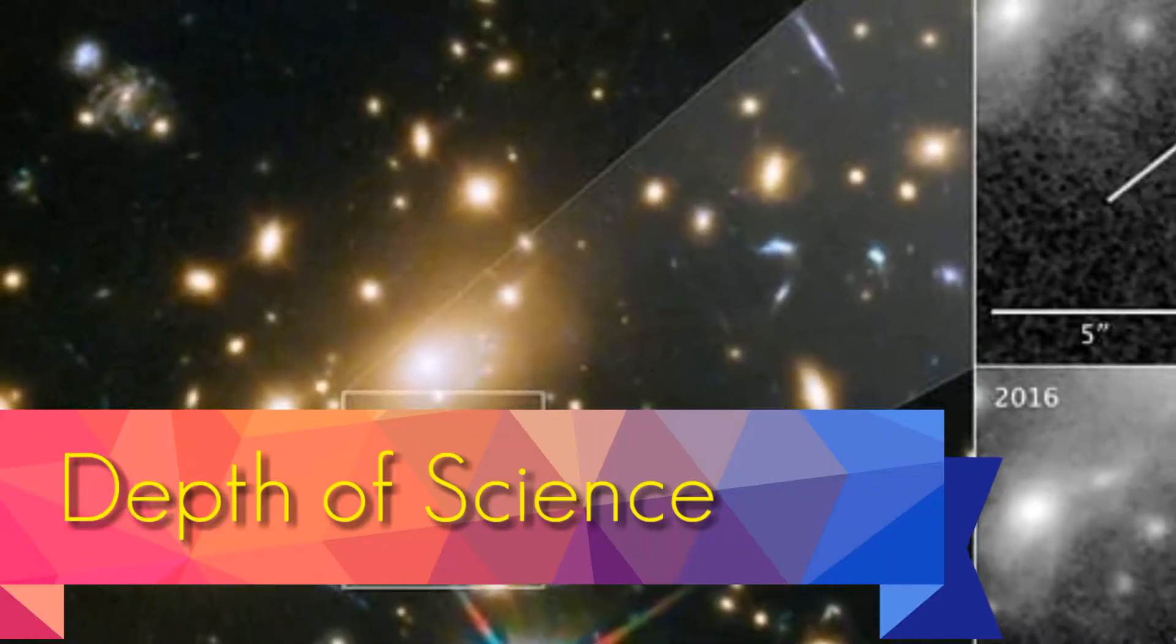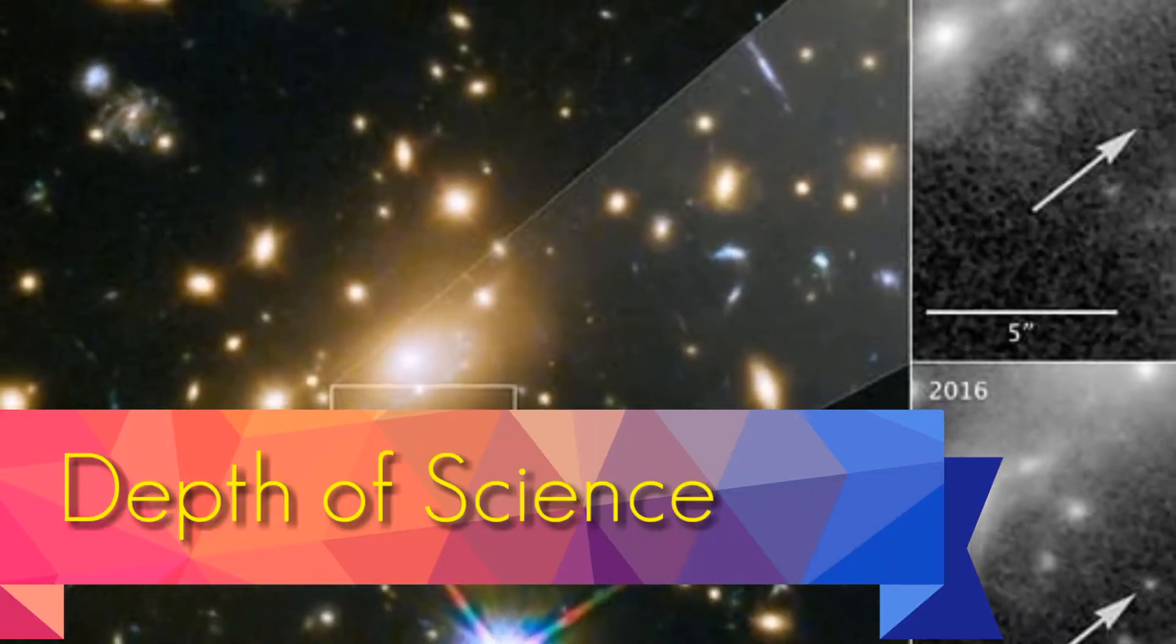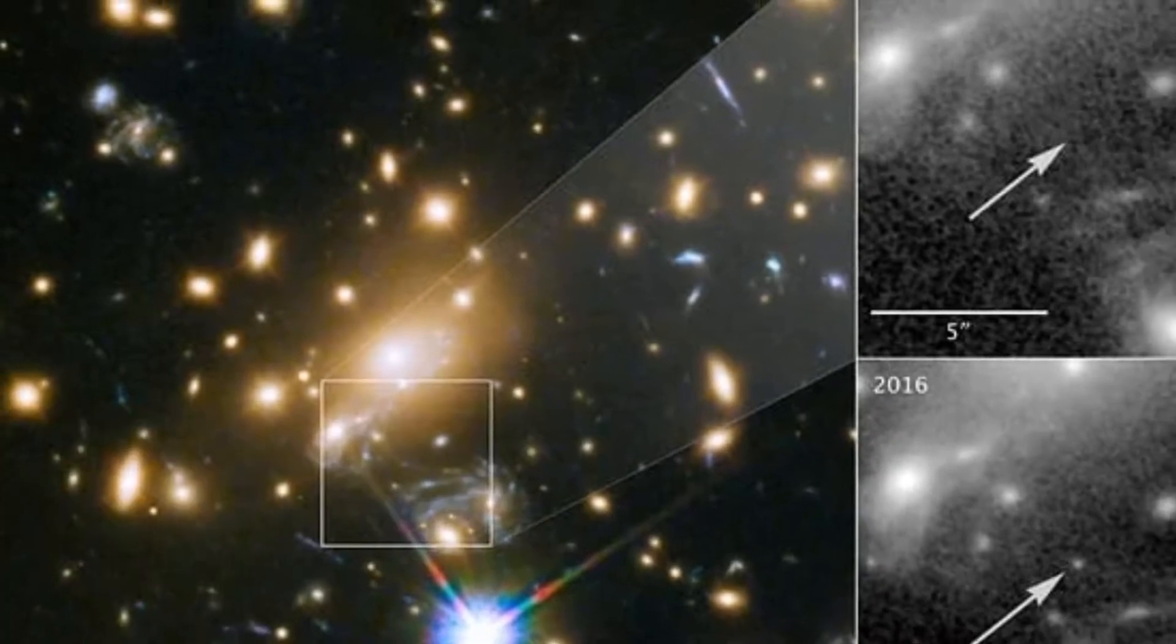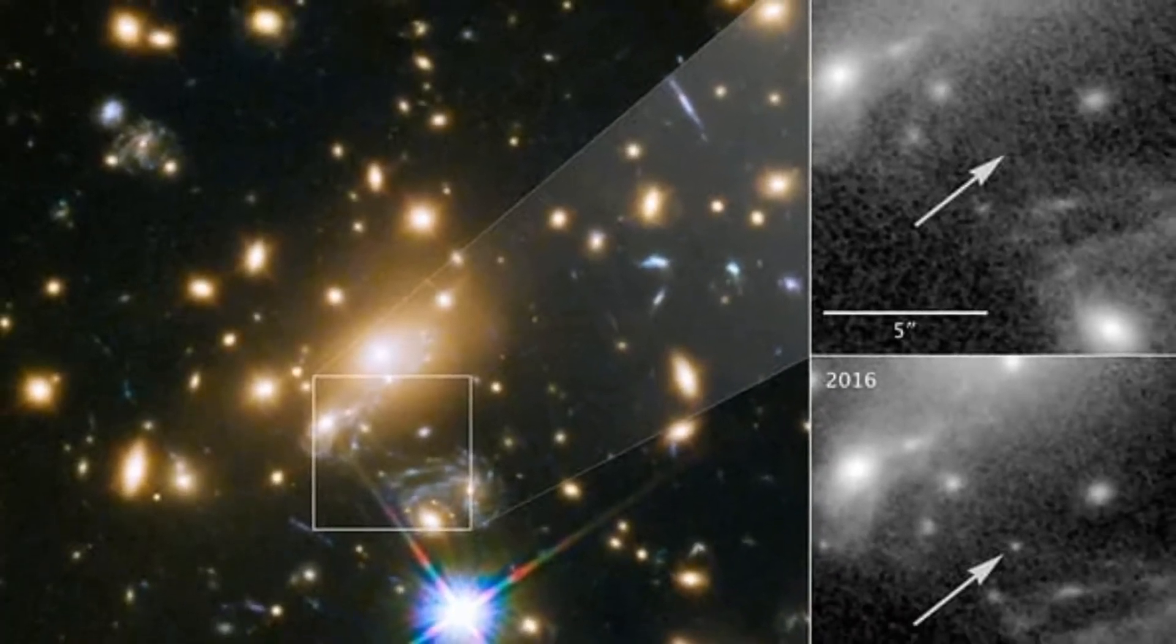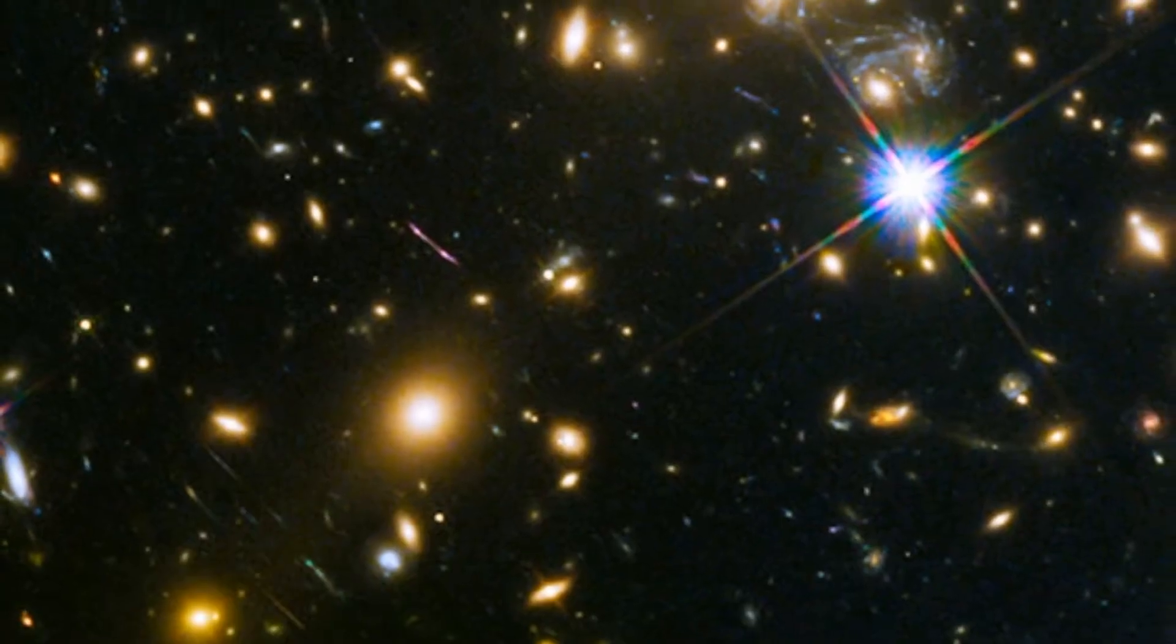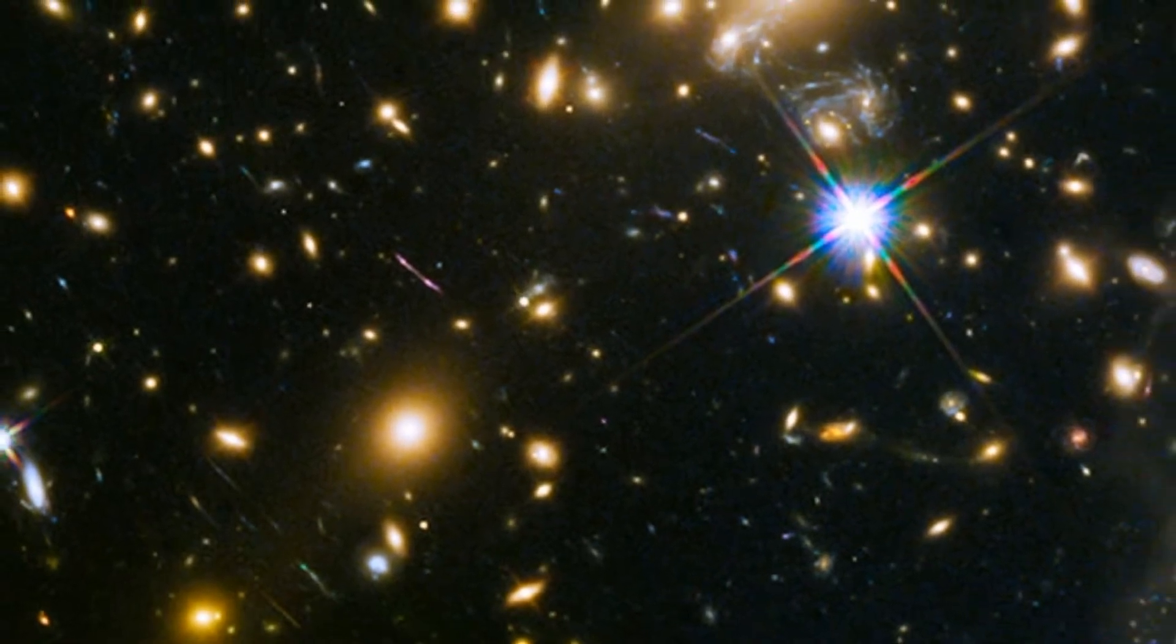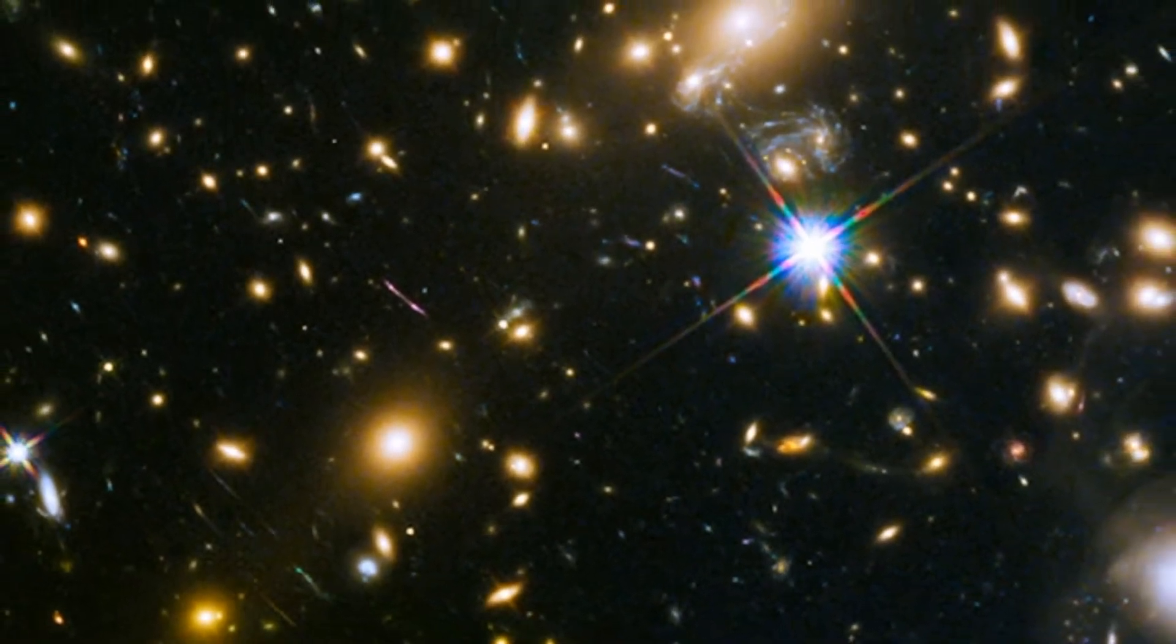Hey guys, welcome all of you on Depth of Science. Scientists say that a pinprick of light in an image captured by the Hubble Space Telescope is the most distant individual star ever seen that is not a supernova.